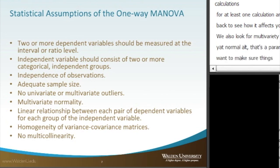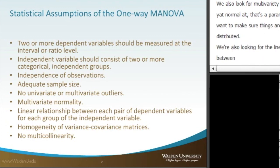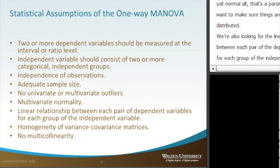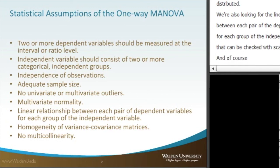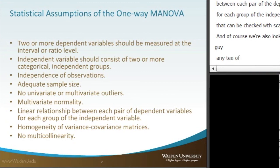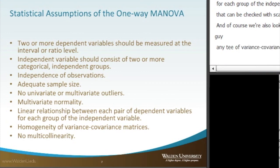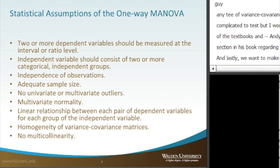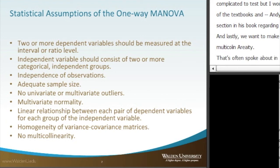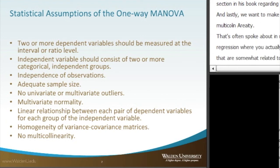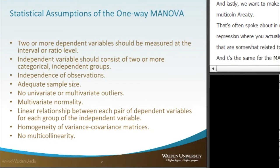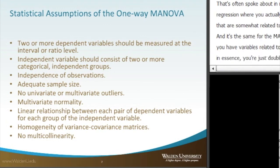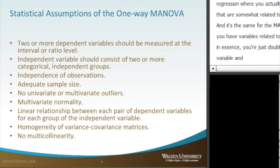We're also looking for a linear relationship between each pair of dependent variables for each group of the independent variable, and that can be checked with scatter plots. We're also looking for homogeneity of variance-covariance matrices, which is a bit complicated to test — Andy Field's textbook has a good section on variance-covariance matrices. And lastly, we want to make sure there's no multicollinearity. Multicollinearity is often discussed in multiple linear regression, where variables are somewhat related to each other. When variables are closely related, you're essentially doubling up on a single variable, and multicollinearity will likely produce non-statistically significant results.